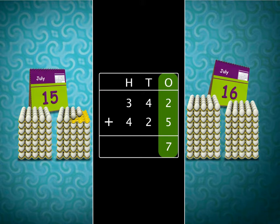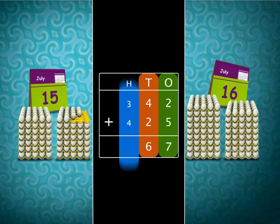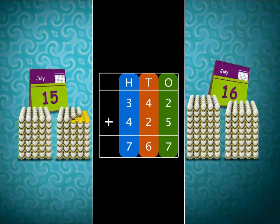Next, adding the digits in the tens column, we get 6 as the answer. Finally, adding the digits in the hundreds column, we get 7 as the answer. Adding 342 and 425, we get 767. So, the total number of eggs collected was 767.